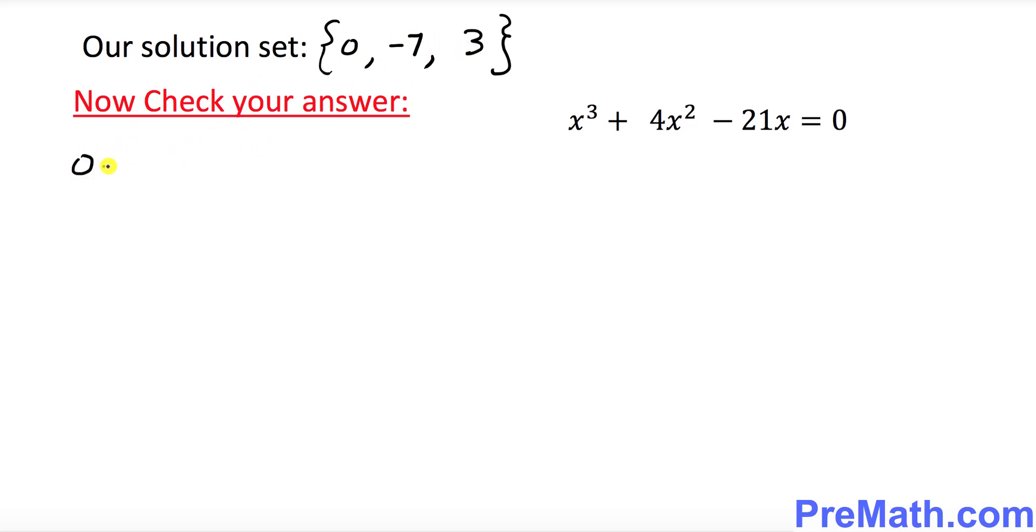So I want you to put down 0 plus negative 7 plus 3 and they must be equal to minus b over a. Now you might be wondering what is minus b over a. What is a and what is b?